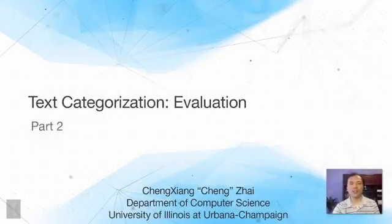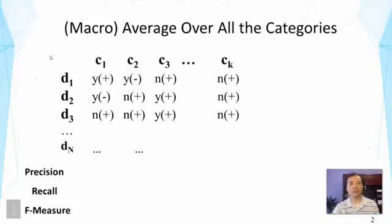This lecture is a continued discussion of evaluation of text categorization. Earlier we introduced measures that can be used to compute precision and recall for each category and each document. In this lecture we're going to further examine how to combine the performance across different categories or different documents — how do we aggregate them, how do we take an average. This is called macro average, in contrast to micro average that we'll talk about later.